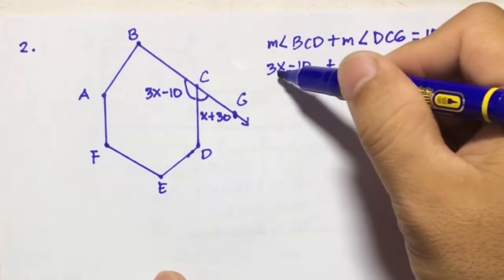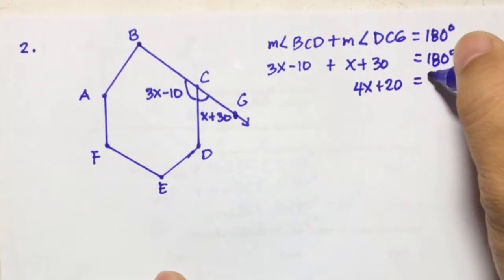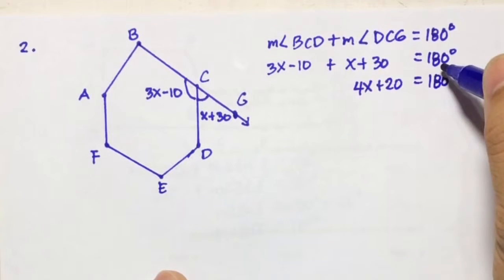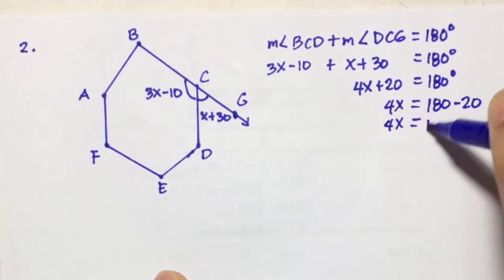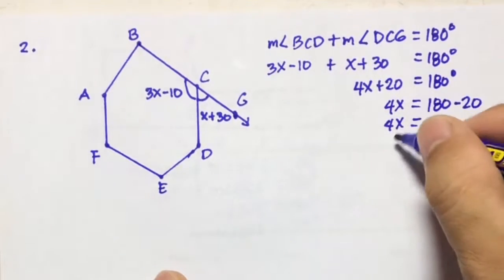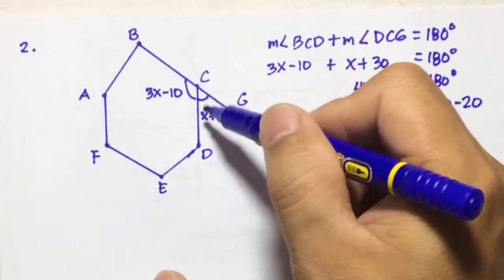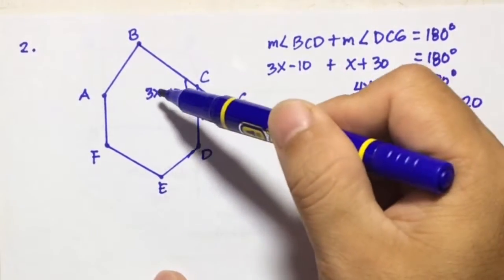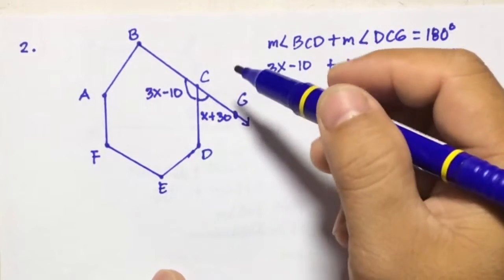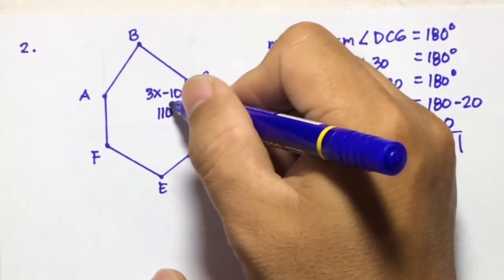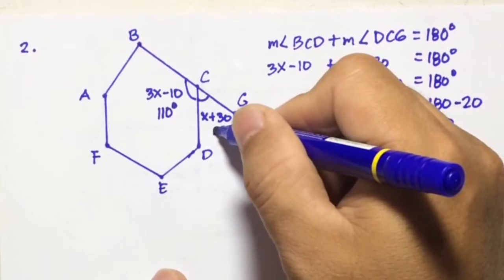Combining like terms: 3X plus X gives 4X, and negative 10 plus 30 gives 20, so 4X plus 20 equals 180. Transposing 20 to the right side: 4X equals 180 minus 20, so 4X equals 160. Dividing both sides by 4, X equals 40. Substituting X equals 40 into 3X minus 10: 3 times 40 is 120, minus 10 gives 110. So angle BCD equals 110 degrees, and since they are supplementary, angle BCG equals 40 plus 30, which is 70 degrees.